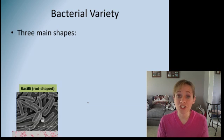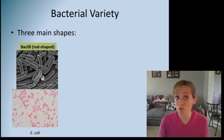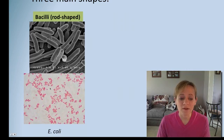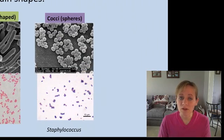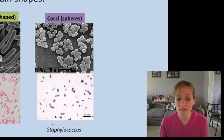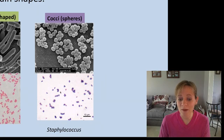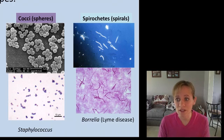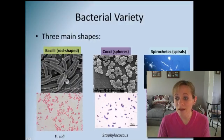Three main shapes of bacteria. First, we have bacillus, which is just rod-shaped. A common example is E. coli — gram-negative, a very common example of a rod-shaped bacteria. The second is called cocci, which is simply little spheres, and the most common example would be staph, staphylococcus — gram-positive, and you can see that it's purple versus pink. The last main shape is called a spirochete, which is simply a spiral. Borrelia is the bacteria that actually causes Lyme disease.